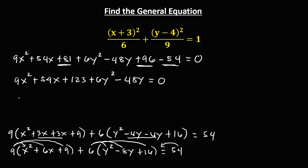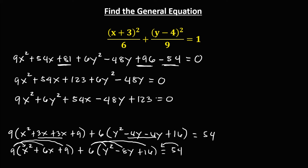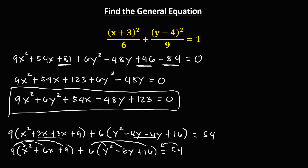81 plus 96 minus 54 equals 123, so plus 123, then plus 6y squared, then minus 48y, then equals 0. We can arrange this equation: 9x squared plus 6y squared, then plus 54x, then minus 48y, then plus 123 equals 0. So this is now the general form of the given standard equation.